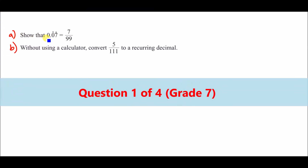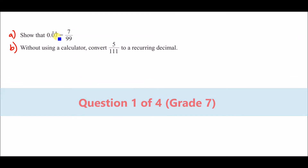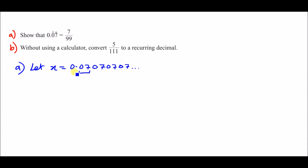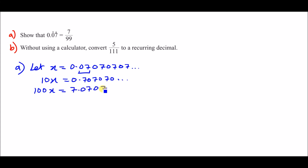Part A: show that 0.07 recurring gives 7 over 99. We need to prove this algebraically. Let x = 0.070707... Two numbers are recurring, so we need to multiply by two powers of 10. Multiplying by 10: 10x = 0.70707... Multiplying by another 10: 100x = 7.070707...